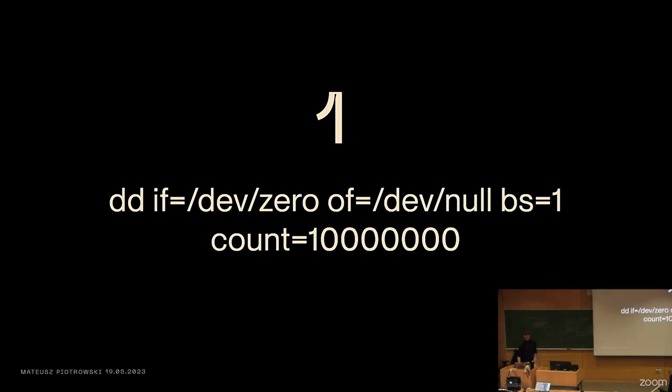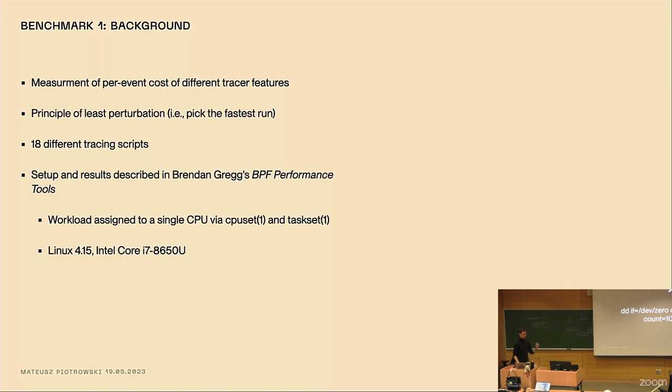So let's take a look at the first benchmarks. So that's the workload I had. It's 10 million bytes. We copy one byte at a time from /dev/zero to /dev/null. It's 10 million because it's a reasonable amount for modern CPUs. It takes a couple of seconds to finish. So it's just the perfect value for a quick micro benchmark.